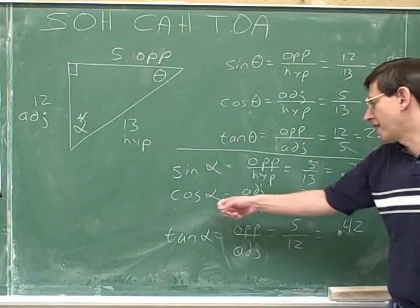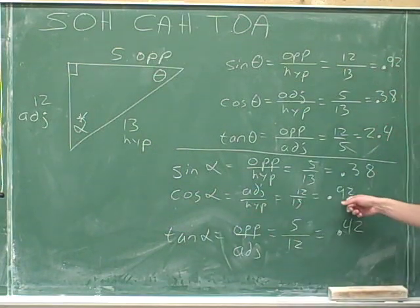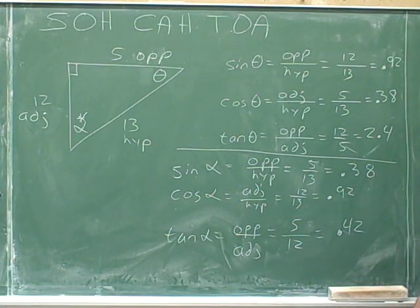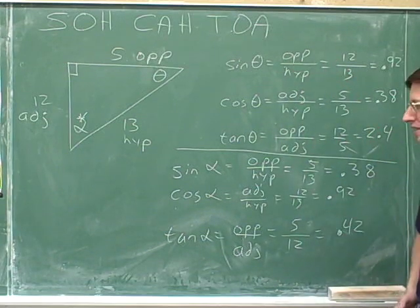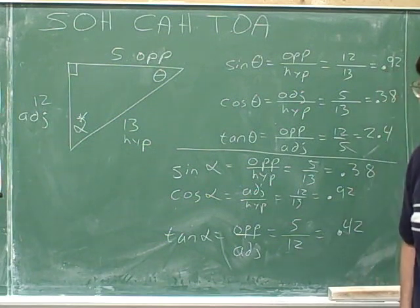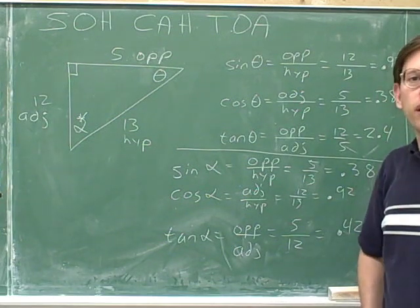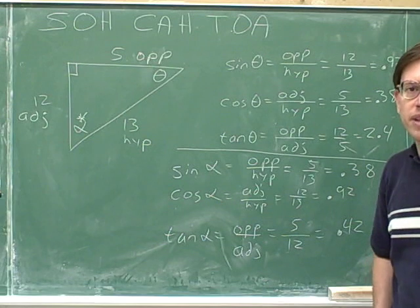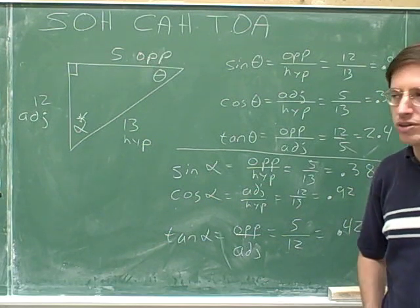Similarly, the cosine of alpha was 0.92, but the cosine of theta was 0.38. So when you shift to a different angle, you're going to change the sine and the cosine. There is a relationship between the sine of theta and the sine of alpha, and the cosine of theta and the cosine of alpha, and the tangent of theta and the tangent of alpha. It shouldn't be too hard for you to figure out what those relationships are, though I'm not going to cover that explicitly at this point.